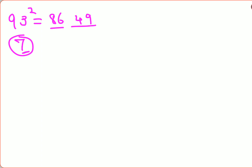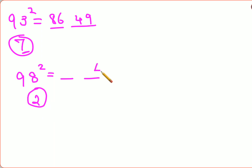Let's try 98 squared. It is 2 away from 100. When writing the square of 2, don't just write 4 — always write it in two-digit form as 04, not 40. Then subtract 2 from 98 to get 96, so the answer is 9604.